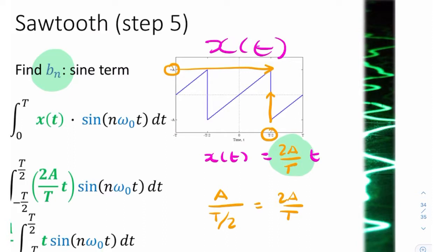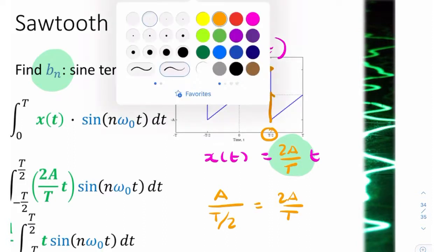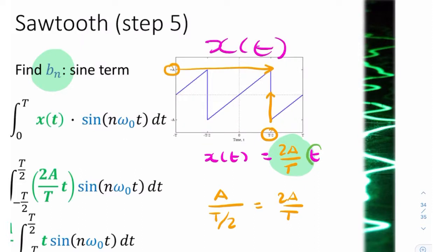That's the equation of the straight line. If you were to substitute T over 2 in there instead of t, you should get that value there of A.